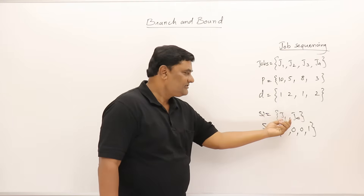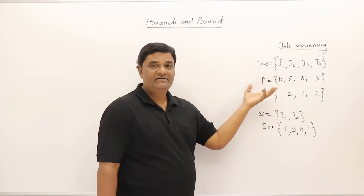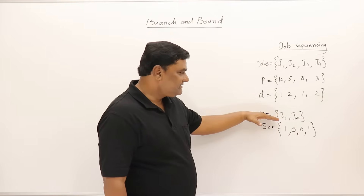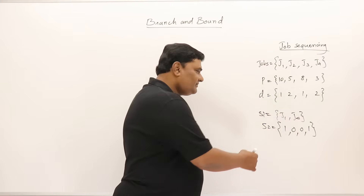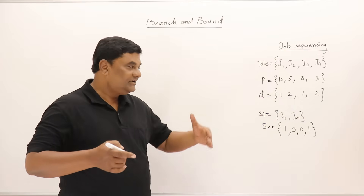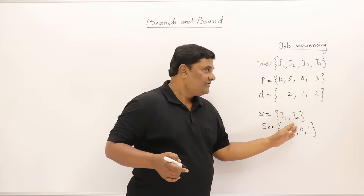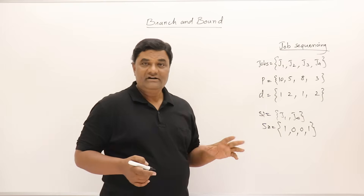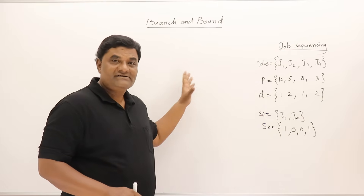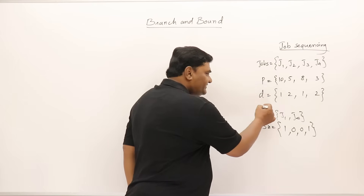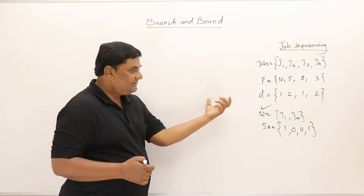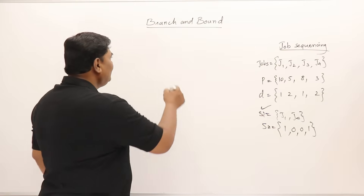With the subset method the solution size is variable — sometimes two jobs, sometimes three, sometimes one. With the fixed-size method the solution always has entries equal to the number of jobs, represented as zeros or ones. There are two methods for drawing the state space tree. I will follow the subset method first, which gives a variable size solution.